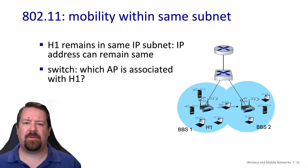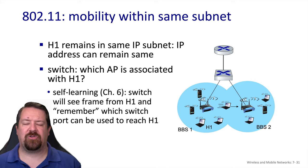Mobility can happen between access points, and because this is handled in the Layer 2 environment, it is transparent from an IP perspective. When two basic service sets participate in the same wireless network and host H1 transitions from one access point to another — likely because it moved closer and the signal is stronger there — the ethernet frames from the router need to reach the correct access point. The answer is the same self-learning process as wired Ethernet switches: when H1's MAC address moves, those frames start coming from the new access point and the switch updates its table accordingly.